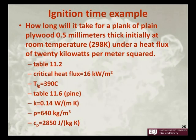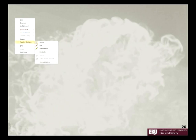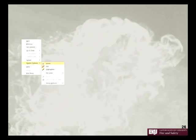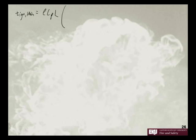We have an example: how long would it take for a plank of plain plywood, half a millimeter thick, initially at room temperature, under a heat flux of 20 kilowatts per meter squared to ignite? We can use our equation: time to ignition is equal to rho times C_p times L, times the quantity temperature of ignition minus temperature initial, divided by the heat flux.